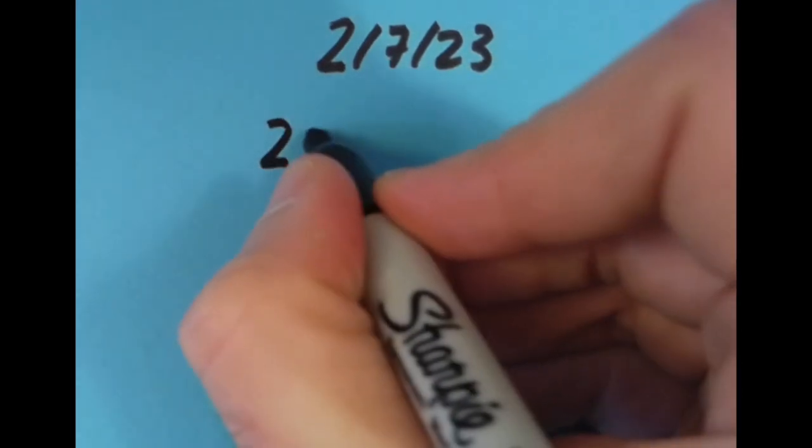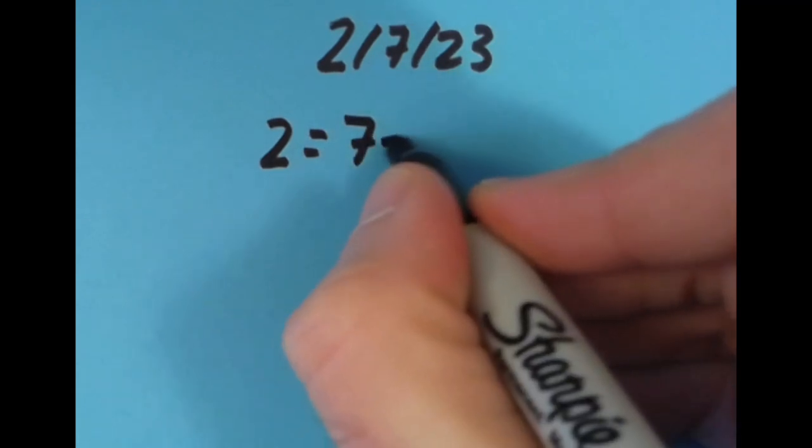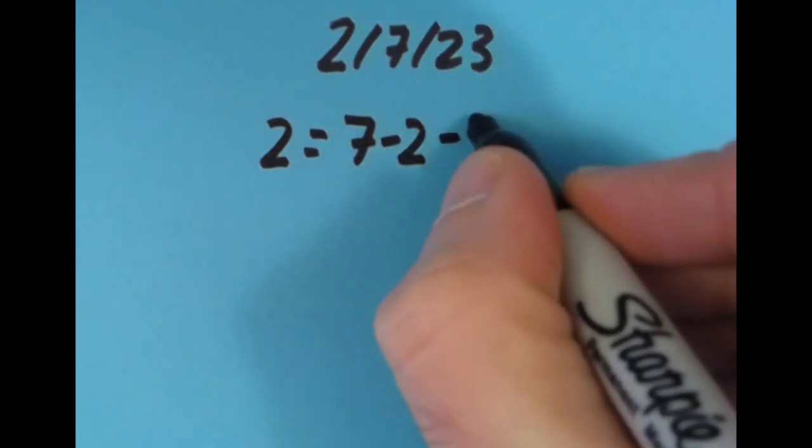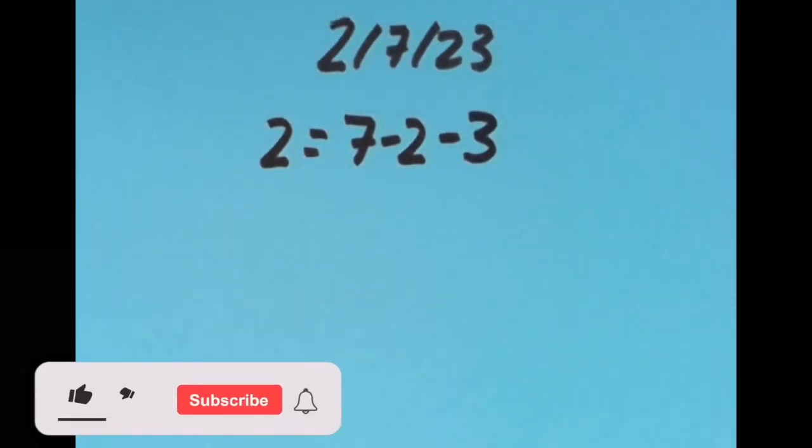I came up with 2 equals 7 minus 2, which is 5, minus 3, which is 2. So I like that one. All I needed was subtraction, but I did try it some other ways.